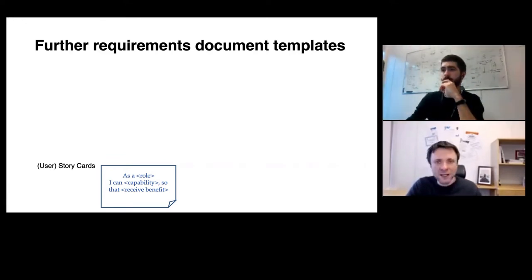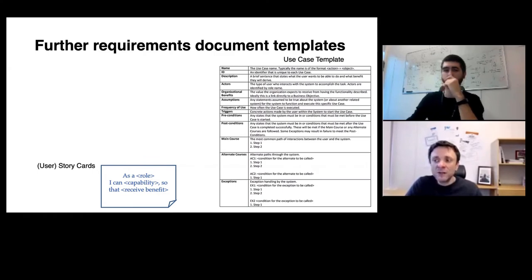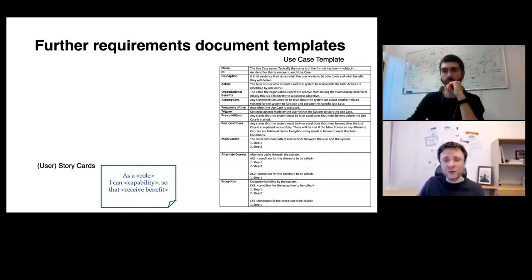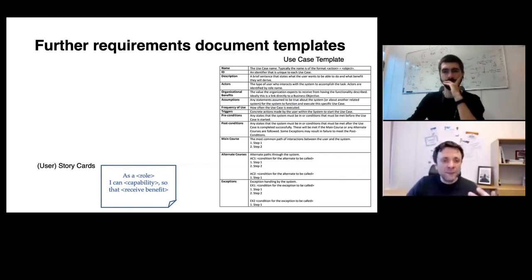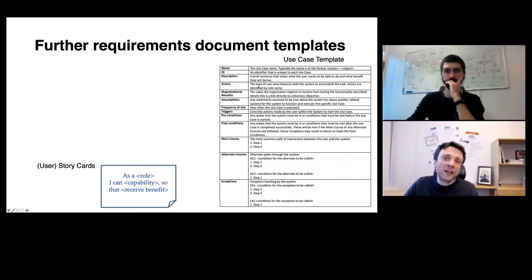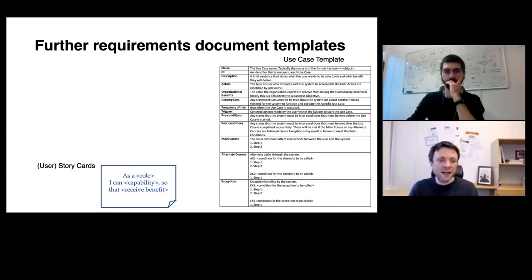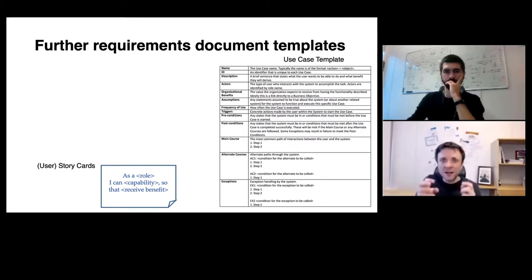Another way to specify user-visible behavior is use cases — essentially the same concept but at a different level of granularity. A use case specifies the intended way of interacting with a software system from an end user perspective, focusing on different interaction scenarios: typically a primary scenario describing the intended interaction, and certain alternative scenarios.